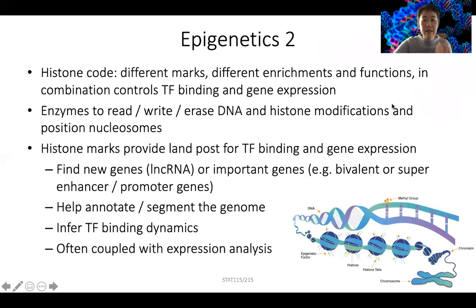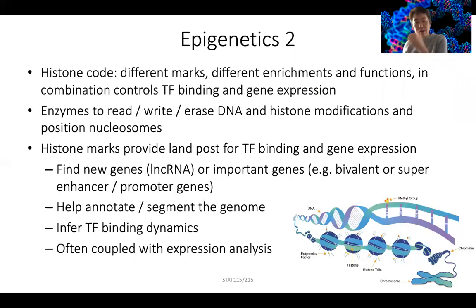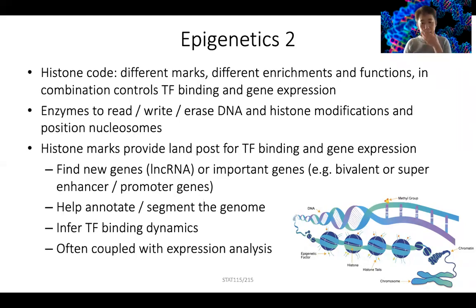The next level of epigenetics is histone modification. There is a theory of histone code — depending on the different histone marks, they have different enrichment in the genome. Some histone marks are at promoters, some at enhancers, some are enriched on gene exons, and they all have different functions. In combination, all the histone modifications establish the epigenetic landscape of the cell, controlling where transcription factors prefer to bind, what genes are expressed, and the cell remembers its lineage.